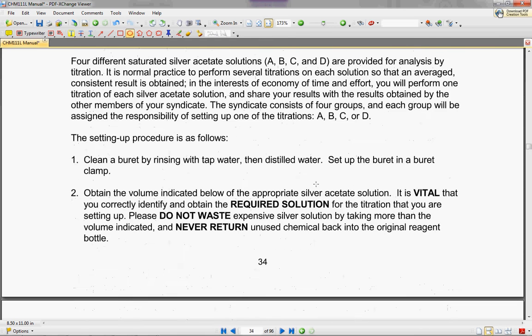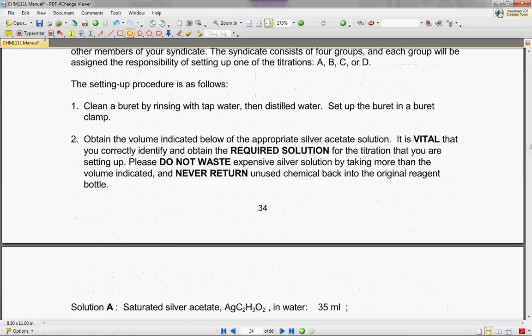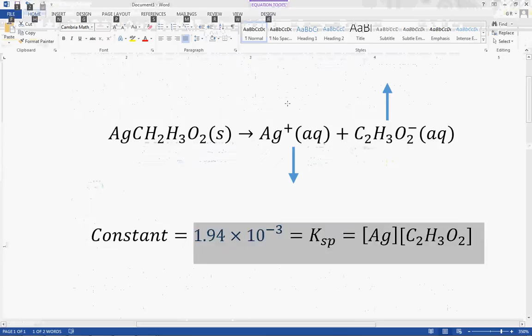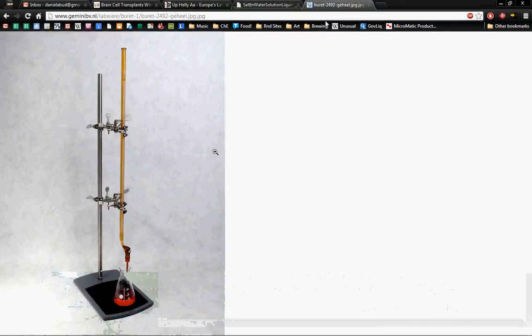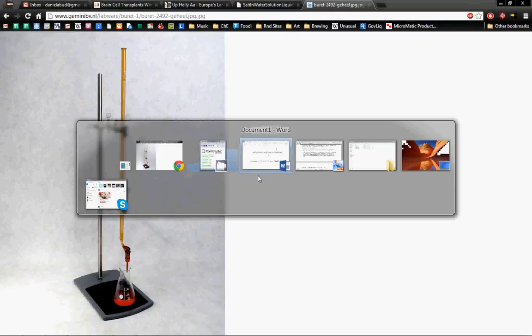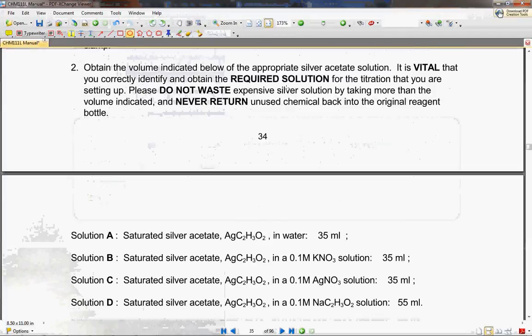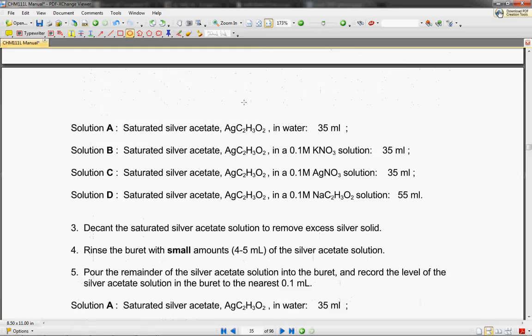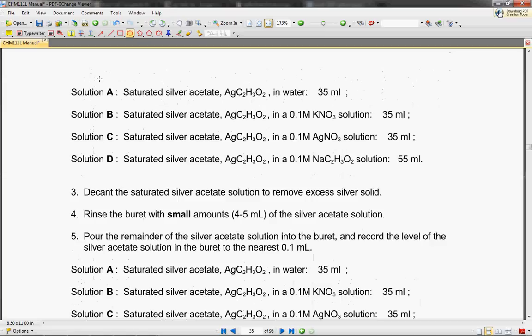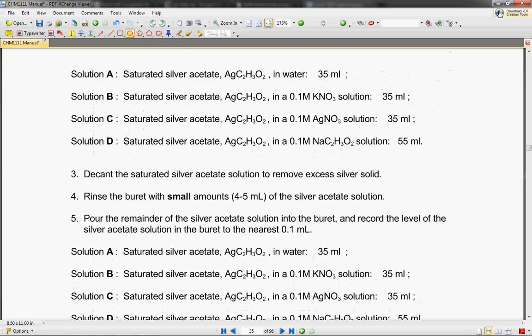So you're going to start off by rinsing your burette, and remember what a burette is, it's just that tall cylinder. So you're going to rinse your burette, and guys, please keep in mind that the silver solution is very expensive, so don't waste any of it. You're then going to mix your solution, whether you're in group A, B, C, or D.